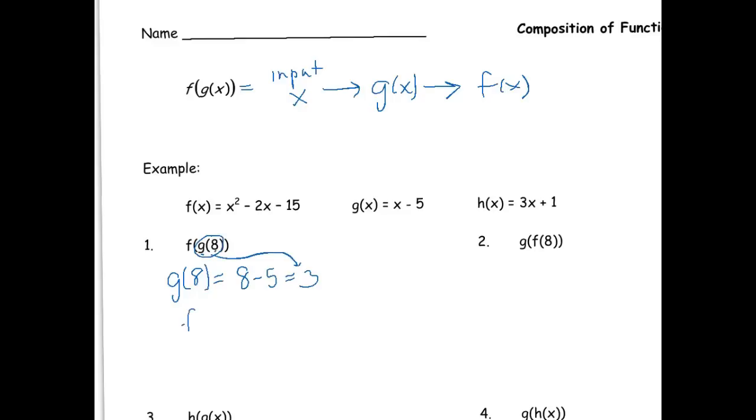We have now taken the g of eight and figured out that it is three. That means our new question is what is f of three. Let's see, we're going to substitute three into f of x. Now we get three squared minus two times three minus fifteen. So let's compute that: nine minus six minus fifteen, which gets us negative eighteen.